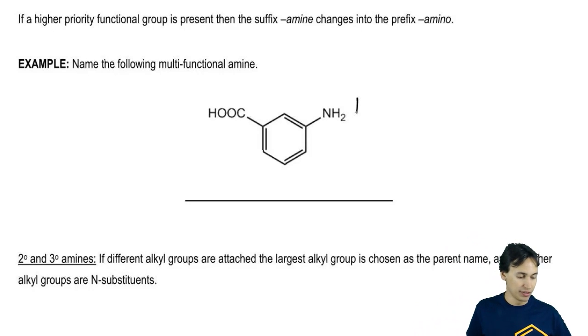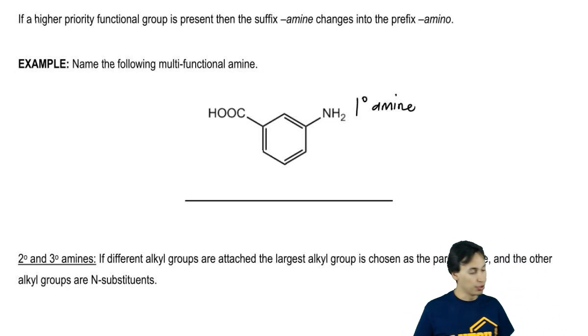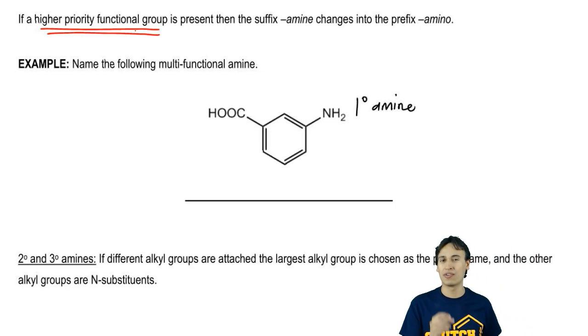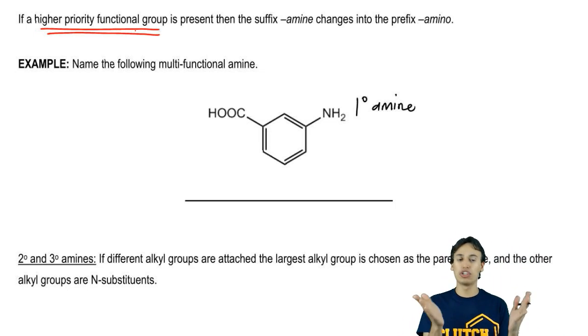What happens if you have a primary amine, so we've got a primary amine here, but it is not the highest priority group? What if a higher priority functional group is present because we just talked about how amines are higher than alkyl groups.